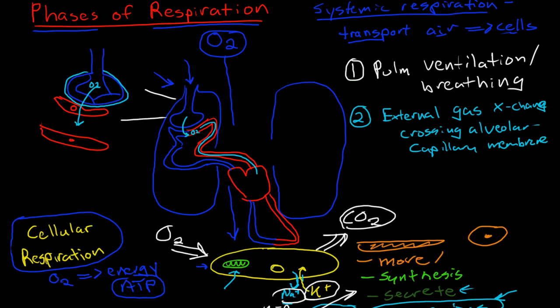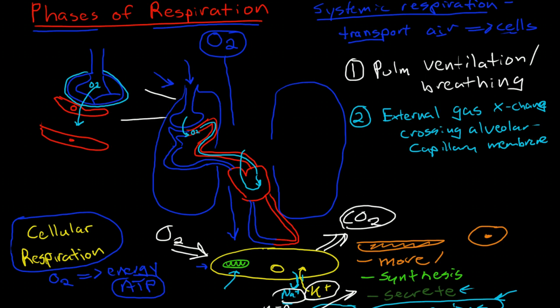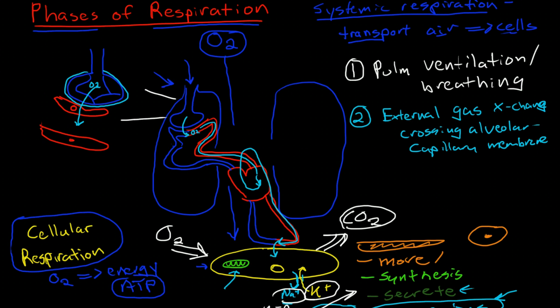And then it's going to get pumped from the left atrium through the left ventricle into the aorta where it's going to go through the systemic circulation and work its way down to the body cells. And then it's going to transition across the capillary membrane into the cells.